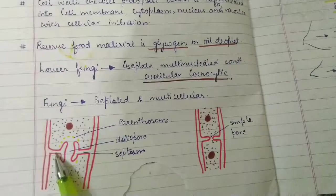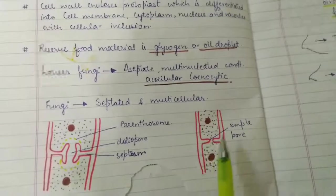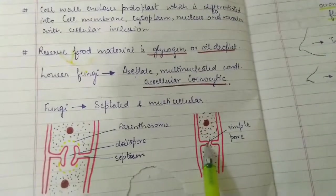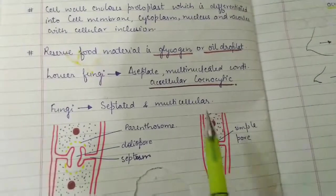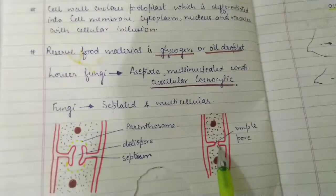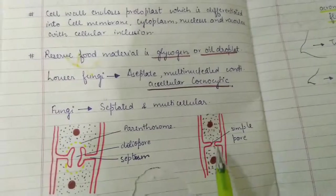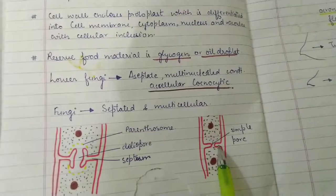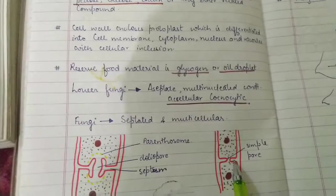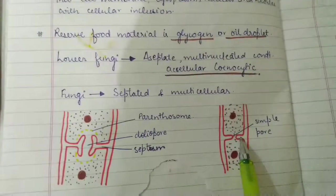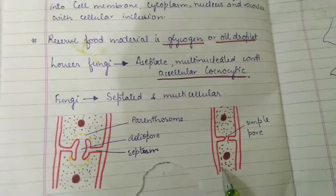Septate hyphae can be further divided into two types based on their pores. A septum always has a pore for transmission of cytoplasmic or nucleic material. The simple pore allows only cytoplasm to be transported from one cell to another. This is needed because fungi lack vascular differentiation — they have no conducting system for nutrition.